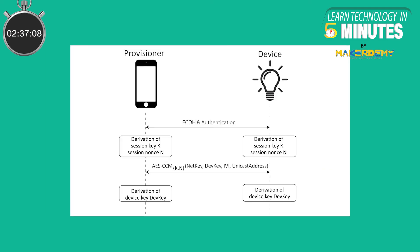Step 5: Provision Data Distribution. After authentication is completed, each device derives a session key using their private key and the public key sent to it from the other device. The session key is then used to secure the connection for exchange of additional provisioning data, including the network key, a device key, a security parameter known as the IV index, and a unicast address which is assigned to the provisioned device by the provisioner. After this step, the unprovisioned device becomes known as a node.